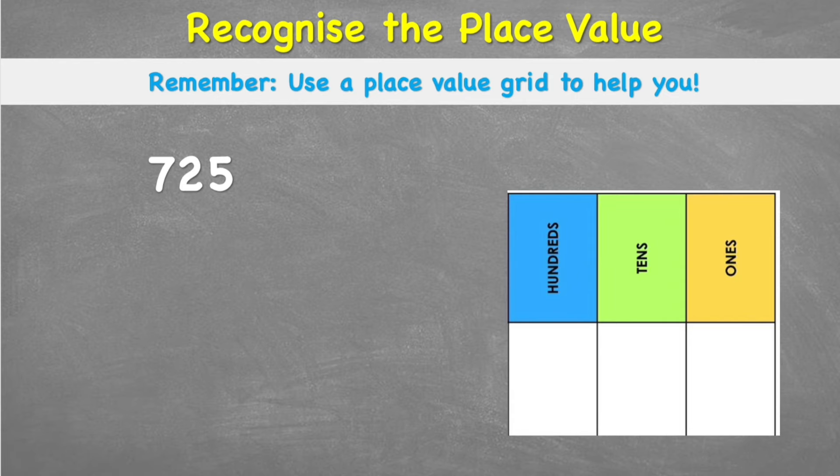What we're going to try and remember today is to use a place value grid to help us. But first of all, what do I mean by a three digit number? Well, if we look at this number here, 725, we can see that it's made up of three digits. We have the 5, the 2, and the 7. And each of these digits has a value.